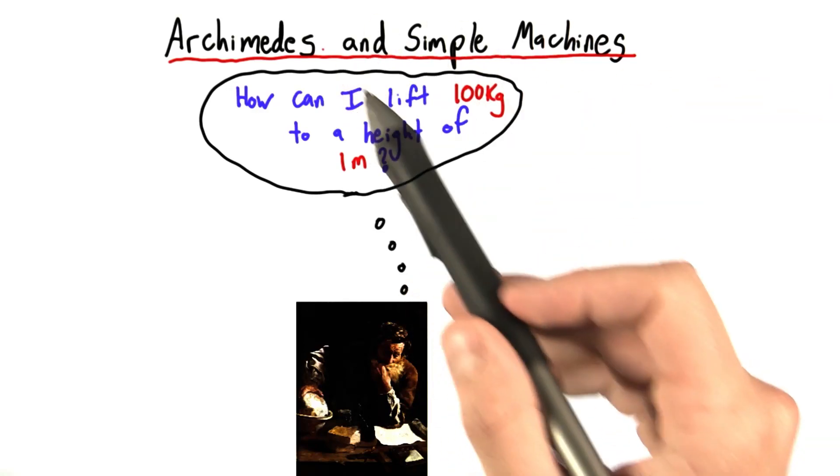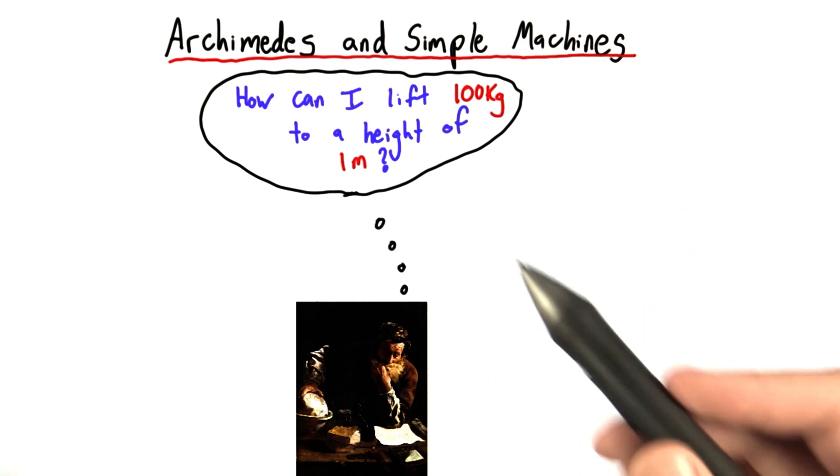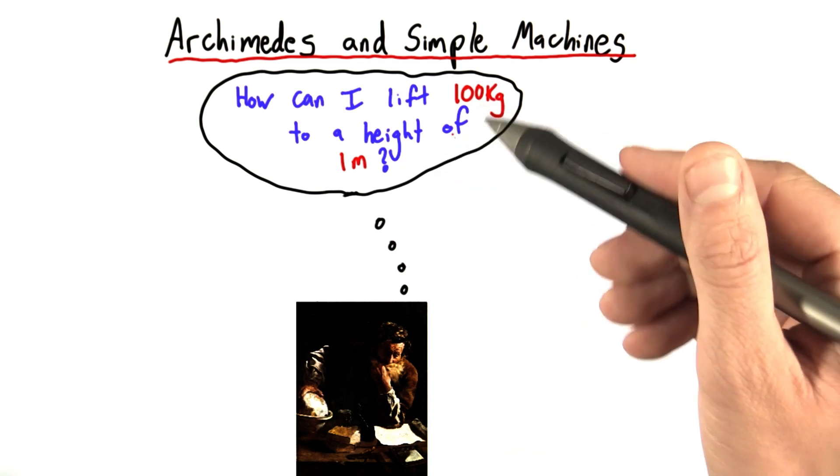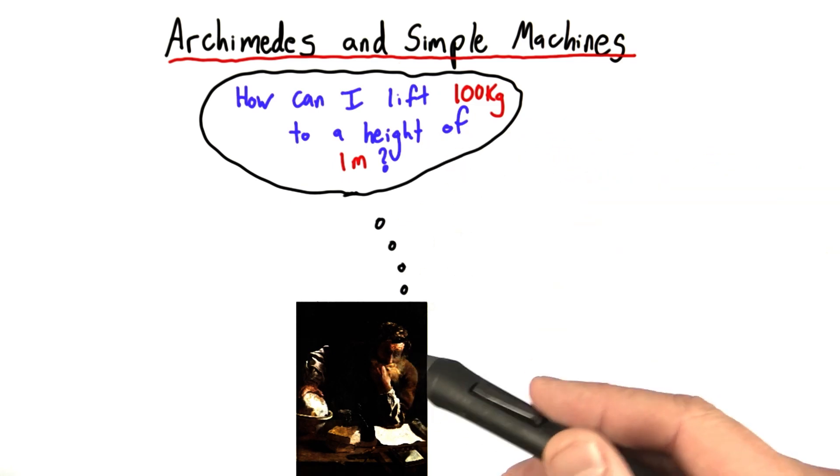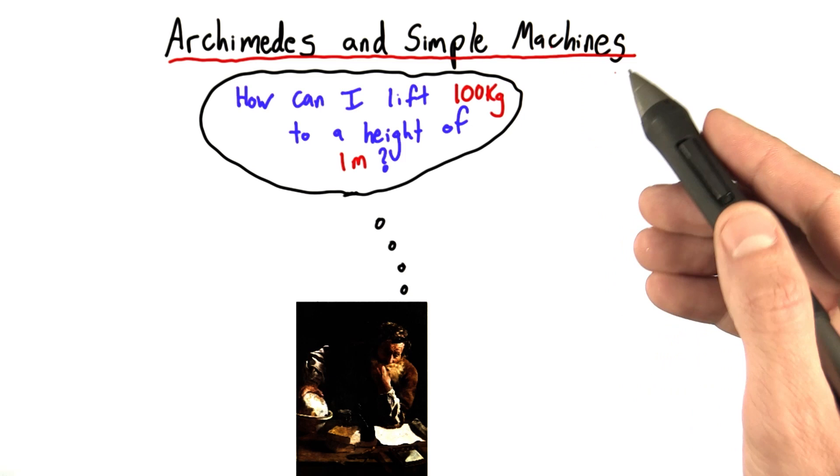Over 2,000 years ago, Archimedes was obsessed with a simple question. How can I lift 100 kilogram mass to a height of 1 meter? Okay, so this might not have been exactly how he phrased the question, but this captures the essence of what Archimedes was thinking when he invented many of the simple machines.